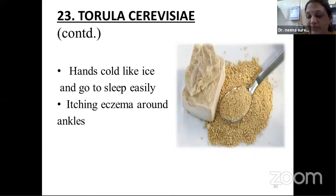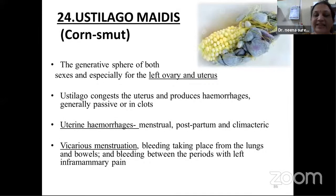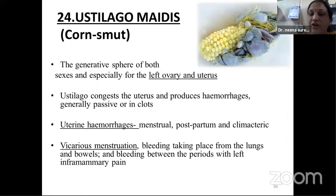Twenty-fourth, the last drug: Ustilago maydis — present in corn, also known as corn smut. Specific affection on the left ovary and uterus. Indicated for hemorrhages — passive with presence of clots. Indicated for menstrual bleeding, postpartum and climacteric hemorrhage. Also indicated for vicarious menses — bleeding from any other orifice instead of menstrual bleeding (lungs or bowels). Bleeding between periods with left inframammary pain is the PQRS symptom.